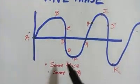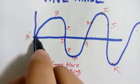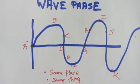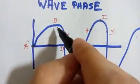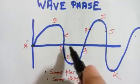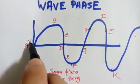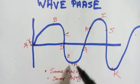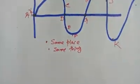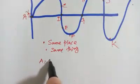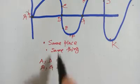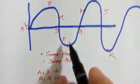Two points are in phase if they are at the same position and doing the same thing. For example, take point A — B is not in phase with A because B is at the crest. Point D is also not in phase with A because A is going up while D is going down. The point in phase with A is point G. So A and D are not in phase, while A and G are in phase.